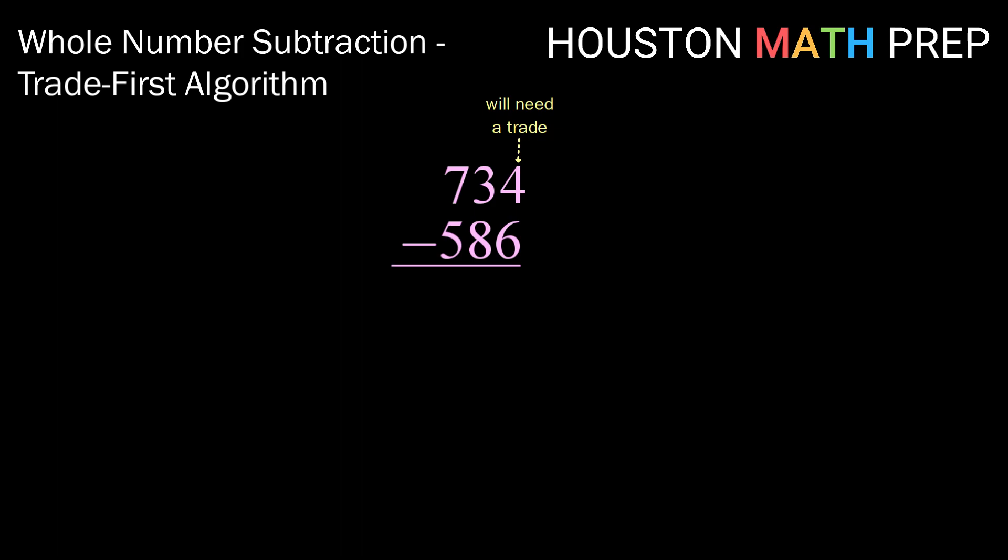So moving left to right, we go ahead and make all of those trades before doing any subtraction. So starting with our first trade, we're going to take one from the 100s column, take it down to a 6, and borrow a copy of the 100. Then, we did need a trade for our ones column, so again, we're going to take one away from that, making that 12, and bring it over.